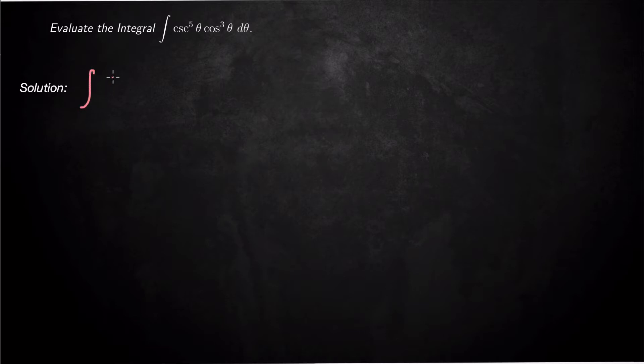So this is going to be the integral of, well, cosecant is 1 over sine, so that's going to be 1 over sine to the fifth power theta. And then I have sine and cosine. I'm going to go ahead and try my strategy. So the strategy is to pull off one of the cosines in this case, because it's in the numerator.